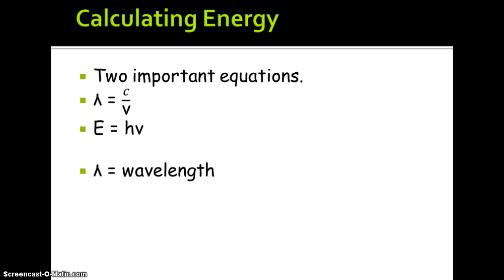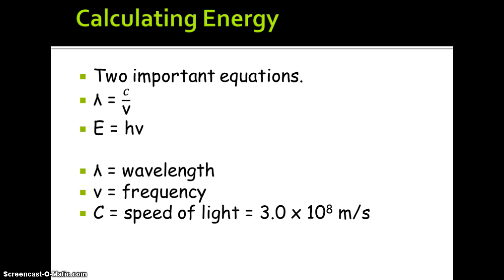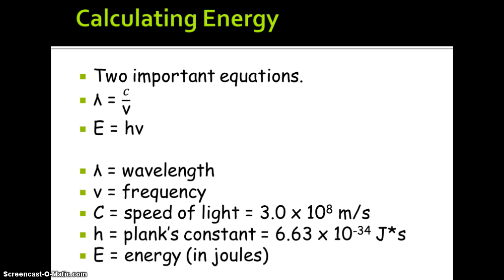Lambda equals wavelength, nu equals frequency, and C equals the speed of light, which is a constant: 3.0 times 10 to the 8th meters per second. H is Planck's constant, also a constant: 6.63 times 10 to the negative 34 joule seconds. And E equals energy, which is in joules.